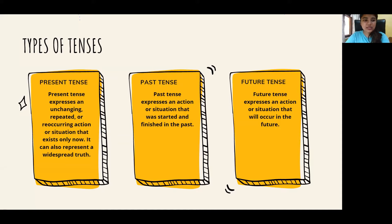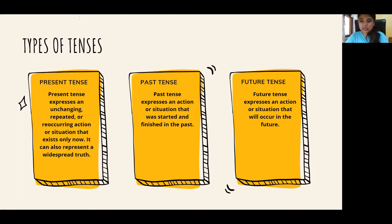Present tense expresses an unchanging, repeated, or reoccurring action or situation that exists only now, that is in the present. Past tense expresses an action or situation that was started and finished in the past. Future tense expresses an action or situation that will occur in the future.